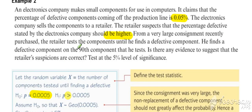From the evidence, he finds a defective component on the 90th component that he tests, and we are working with a 5% significance level.